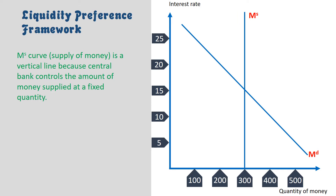The MS curve, or the money supply curve, is a vertical line because the central bank controls the amount of money supplied at a fixed quantity.